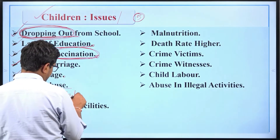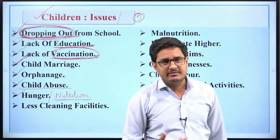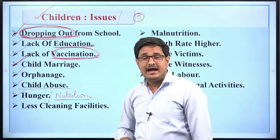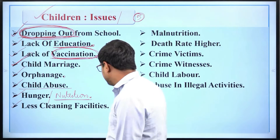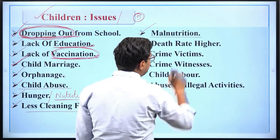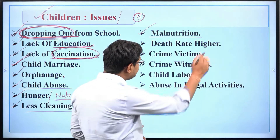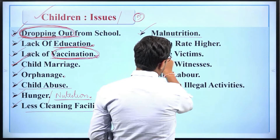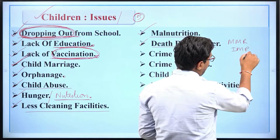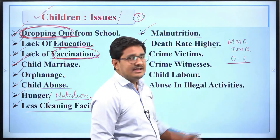Then there is the problem of hunger and nutrition. Children have special nutritional requirements; if they do not get proper nutrition they will suffer from malnutrition and many diseases. There is also a lack of cleaning and hygiene facilities, and a balanced diet is not being provided to children. Then there is the issue of a higher death rate — India's mother mortality rate, infant mortality rate, and death rate for children in the 0 to 6 year age group are higher compared to other developing countries.